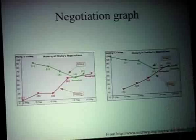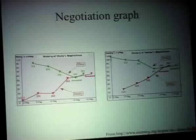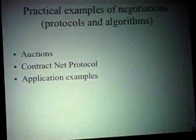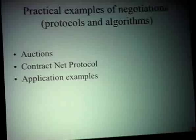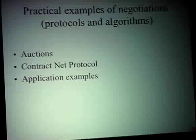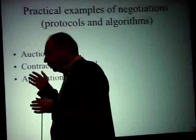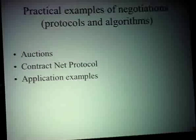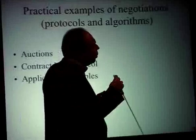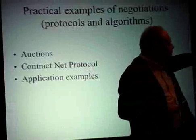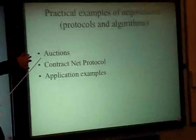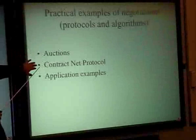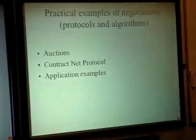Now we will consider other elements of negotiation that are much more intuitively clear. We have already overcome the main difficulties related to abstraction and general notions. Now we consider quite particular cases of negotiations. What is important is that we know, when considering such cases, what are the basic characteristics of negotiation protocol and strategies. We consider two types of widely accepted protocols: auctions and contract net protocol, and finally some application example.